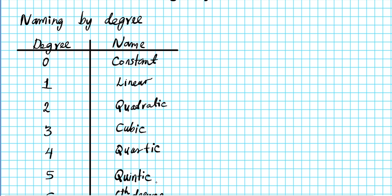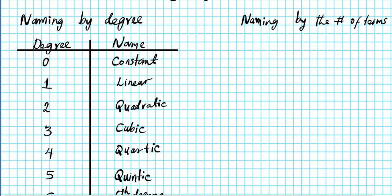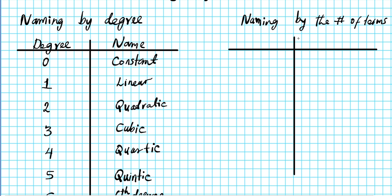Now we're going to name polynomials using the number of terms. Let's make a chart to help us see how to name polynomials using the number of terms. In the first column we'll look at the number of terms, and in the second column we'll look at the name of the polynomial based on the number of terms.